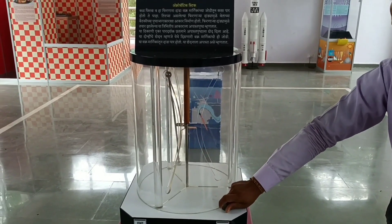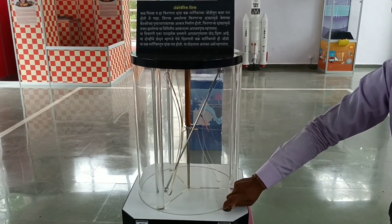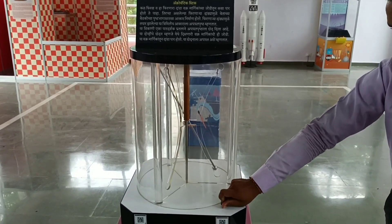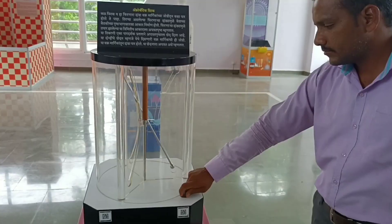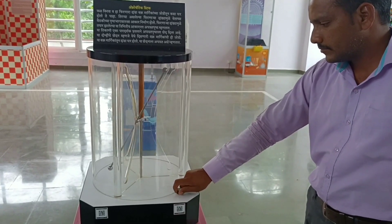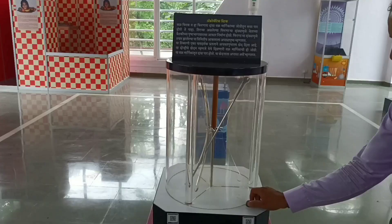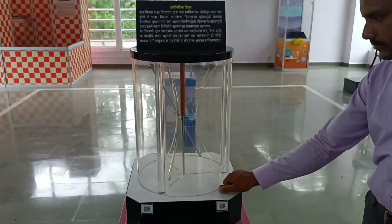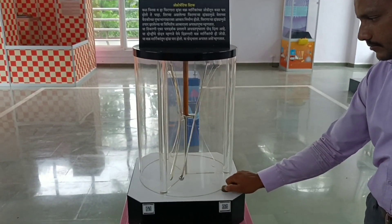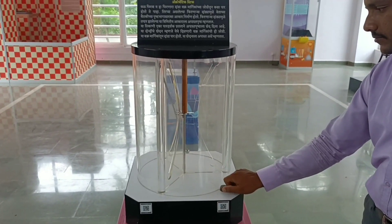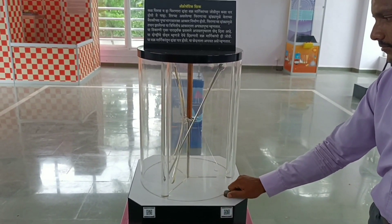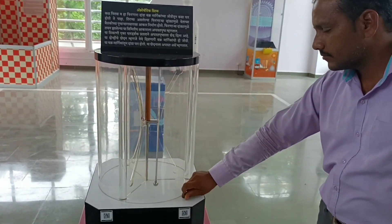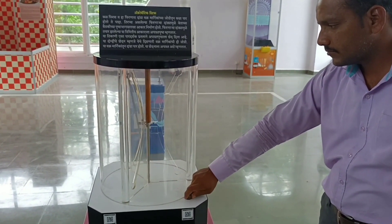Cooling towers of power plants possess a hyperbolic shape, which provides stability to the structure as a whole. Paldao and cane stools are also good examples of hyperboloids.